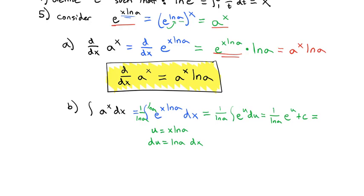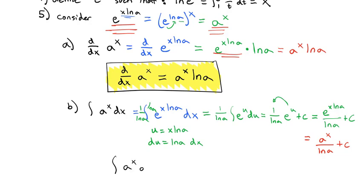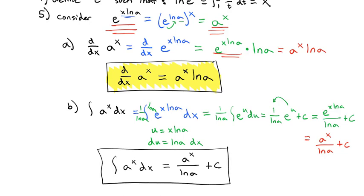That gives us 1 over ln(a) times e to the u plus a constant. Substituting back to x's, we have e to the x·ln(a) all over ln(a) plus a constant. But since e to the x·ln(a) equals a to the x, this simplifies to a to the x over the natural log of a plus a constant. We've created a definition for the integral of a to the x dx: it equals a to the x over the natural log of a plus a constant. Previously we just stated this was true — now we've actually proved it.